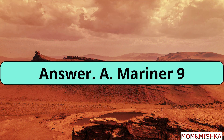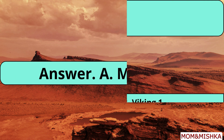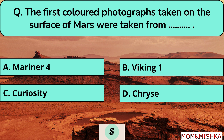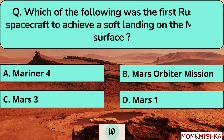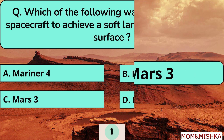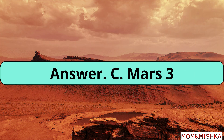Mariner 9 was the first probe to orbit Mars. The first colored photographs taken on the surface of Mars were taken from Viking 1. Mars 3 was the first Russian spacecraft to achieve a soft landing on the Martian surface.